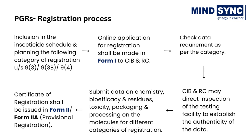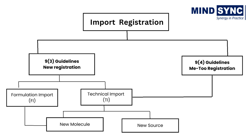MindSync will assist you in getting the registration of your product. Import registration is done under various sections of the Insecticides Act 1968. Under Section 9(3), New Registration applies to products or sources not yet registered in India — any first-time registration of a molecule or source falls under this category, and can be for formulation import or technical import of a new molecule or new source. The other option is MeToo Registration under Section 9(4), for products and sources already registered in India. Each section has a different set of data requirements for registration.